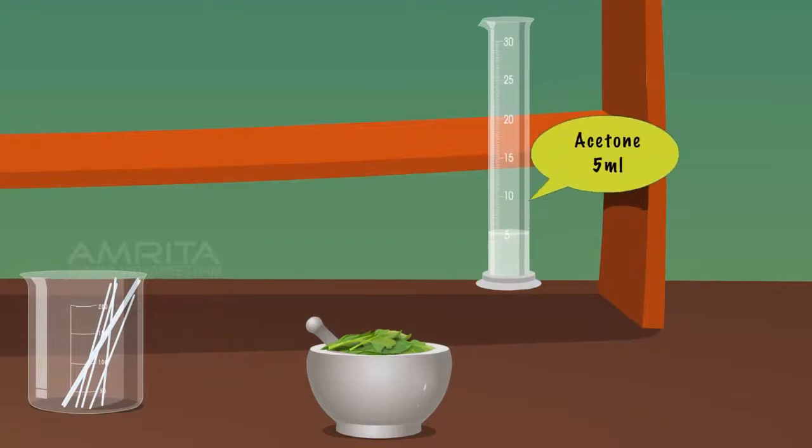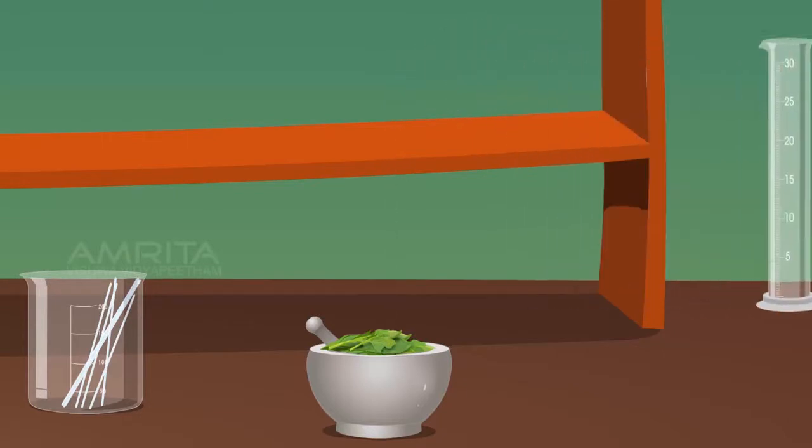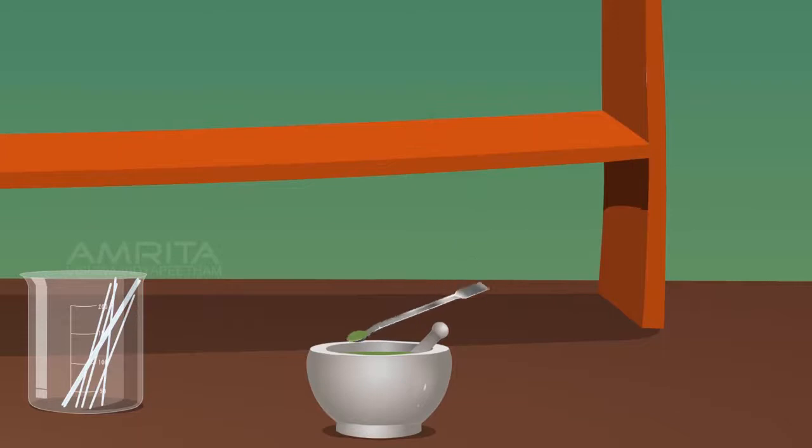Pour about 5ml of acetone into the mortar. Grind the spinach leaves using the pestle. Using a spatula, collect some extract into a watch glass.